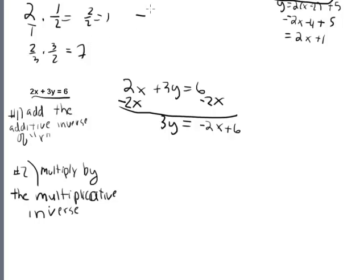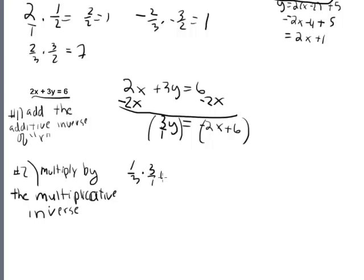If the number were negative 2/3, you would multiply by negative 3/2, which gives you 1 because you get negative 6 over negative 6. The multiplicative inverse is easy — just think of the number as a fraction and flip it. So we're going to multiply everything by 1/3: 1/3 times 3y equals 1/3 times negative 2x plus 1/3 times 6, which gives us y equals negative 2/3 x plus 2.